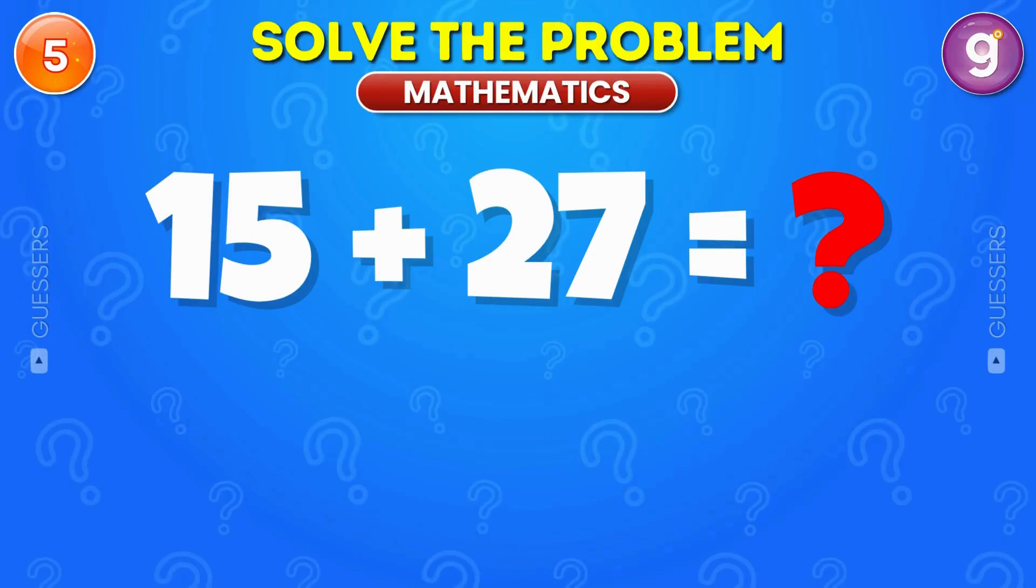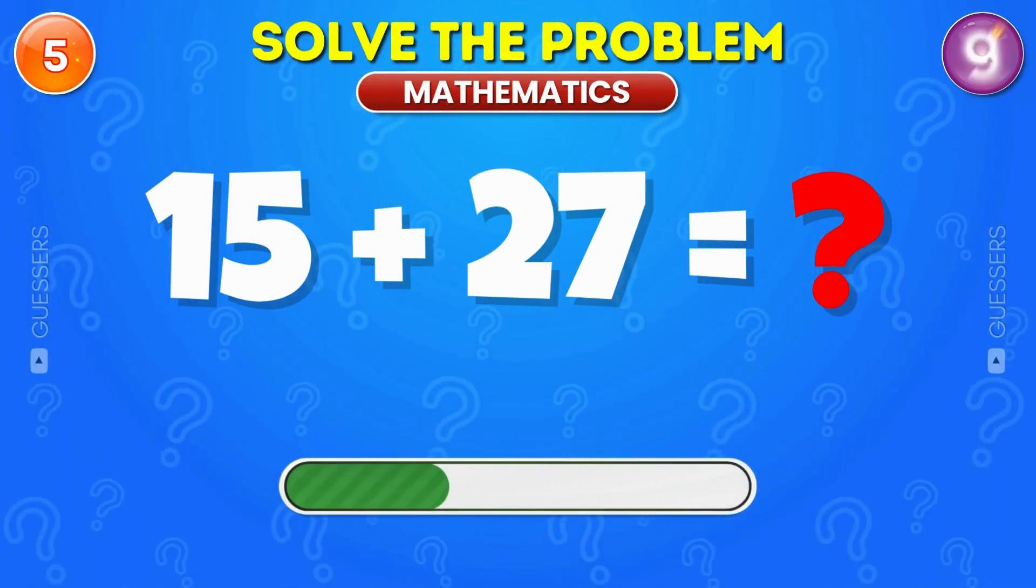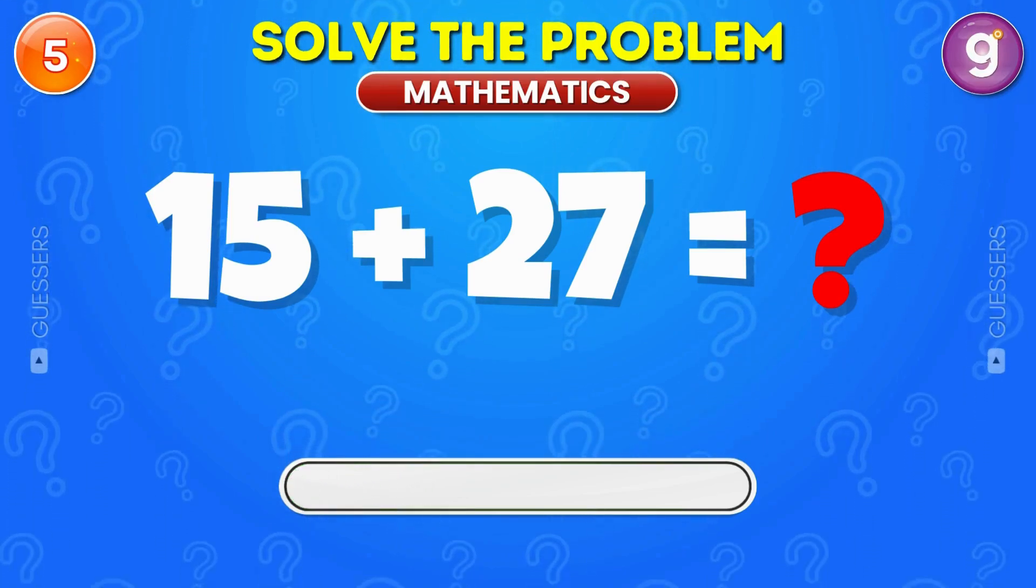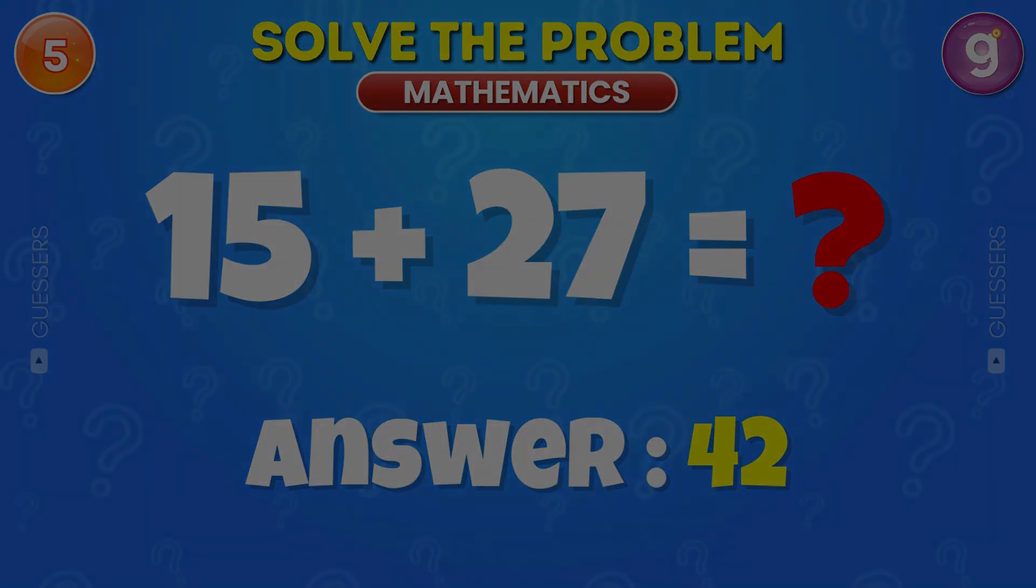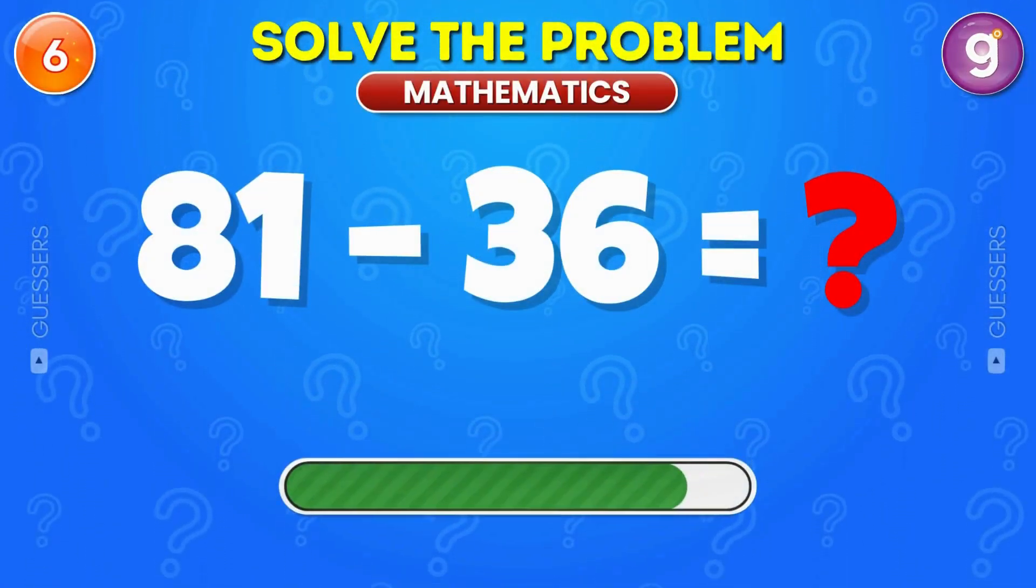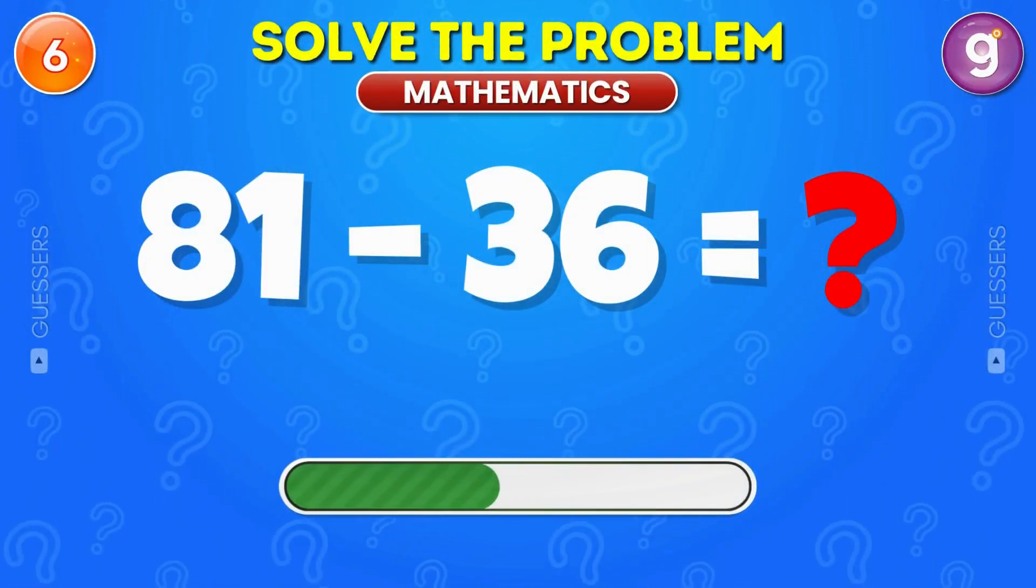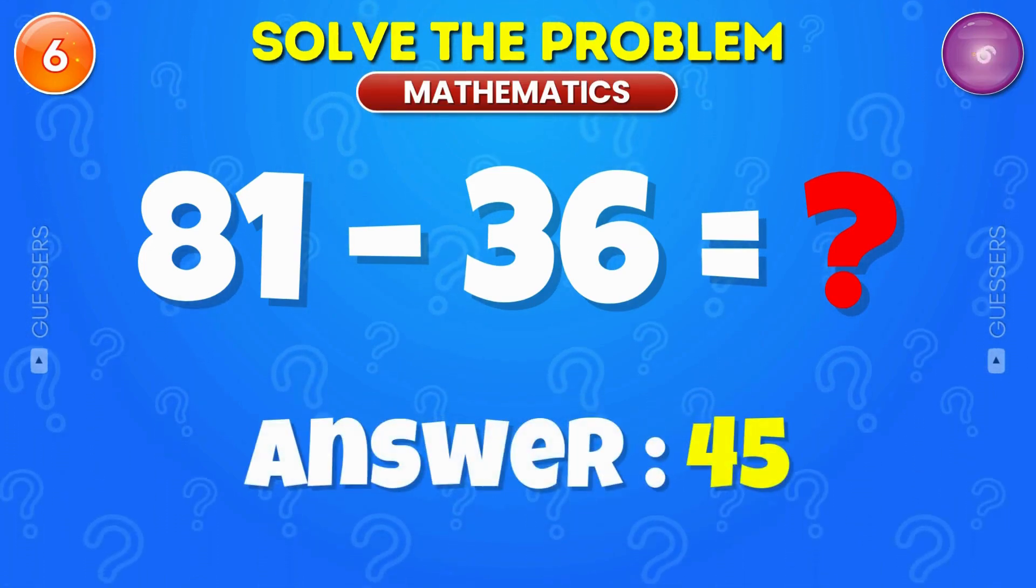What is 15 plus 27? It's 42. Subtract 36 from 81. The answer is 45.